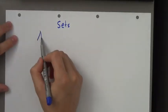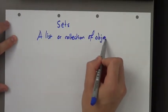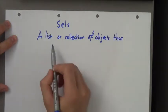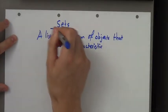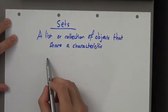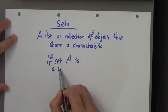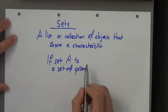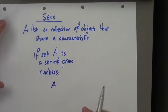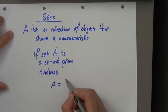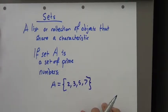Now what is a set? It's basically a list or collection of objects that share a characteristic. So, an example. If set A is a set of prime numbers, and if I were to list them, then I would say, this is the notation I would use, I would say A as prime numbers.